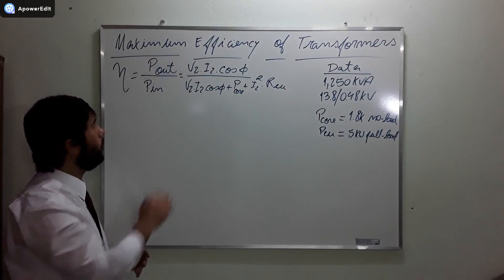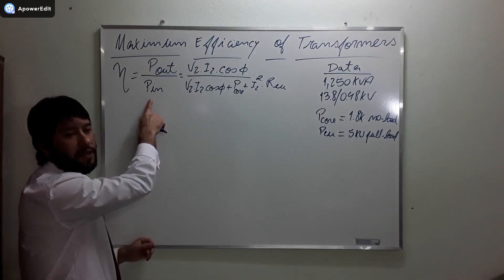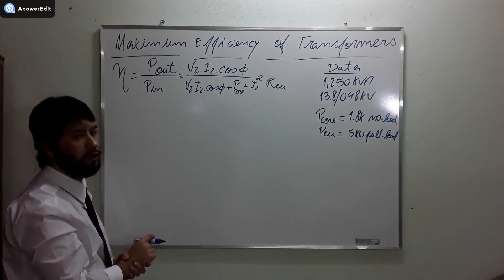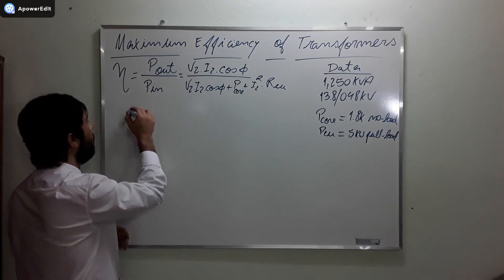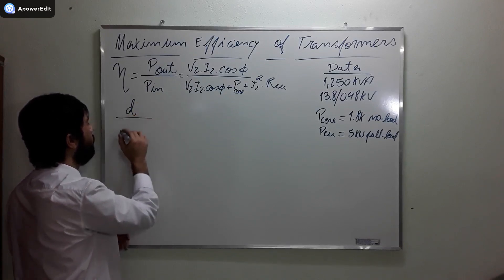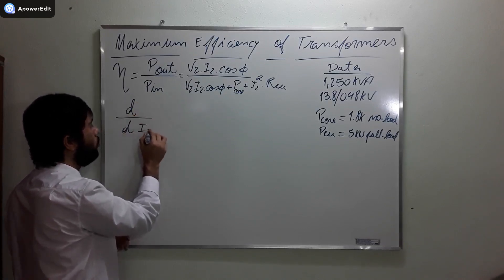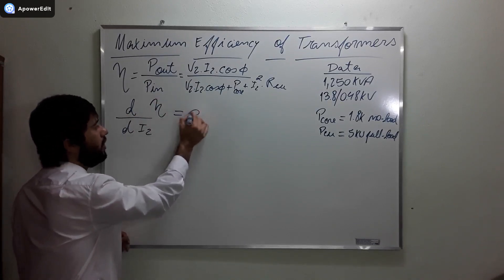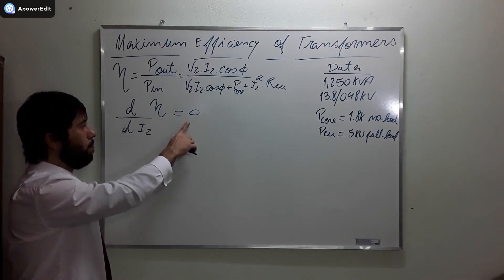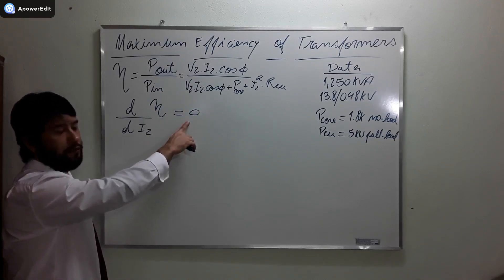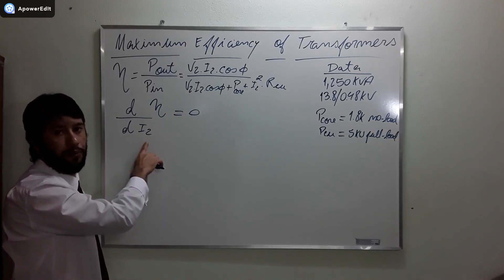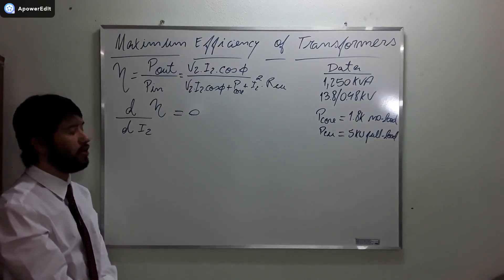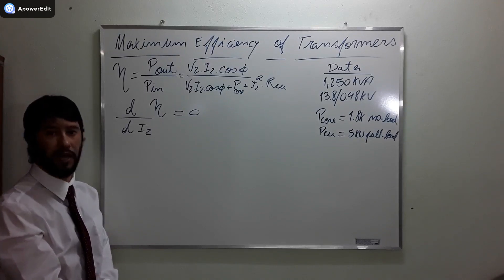The maximum efficiency, we want to maximize this. How do we do that? How do we maximize the efficiency? We take the derivative. The derivative with respect to the output current of the efficiency has to be equal to zero. When we make the derivative of the efficiency with respect to output current equal to zero, we maximize the efficiency.